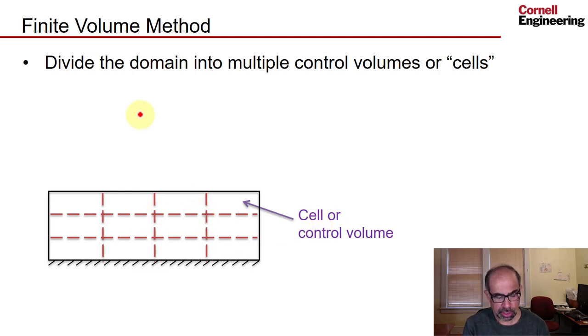And then you reduce the problem to determining the velocity and pressure at the cell centers. So since we have 12 cells, we have 12 cell centers. And at each cell center, say, a cell center like that, you determine the primary unknowns: u, v, p.